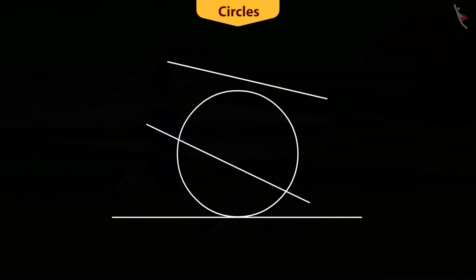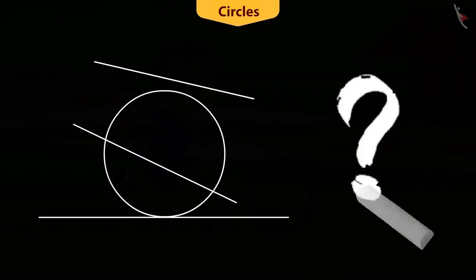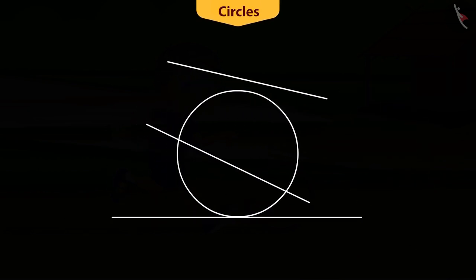Observe this figure. What can you say about the circles and the lines here? There are three possibilities of the arrangements of circle and lines.